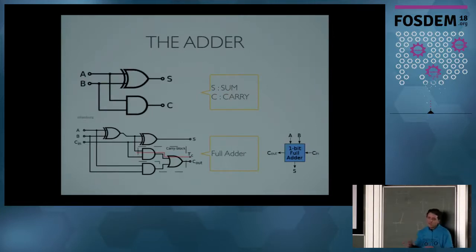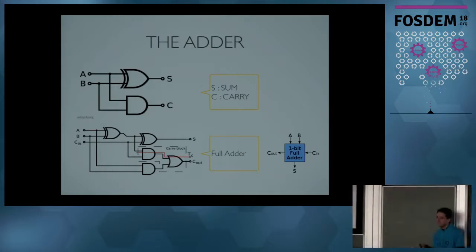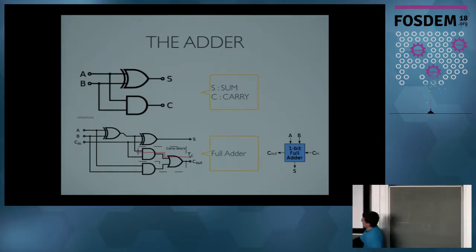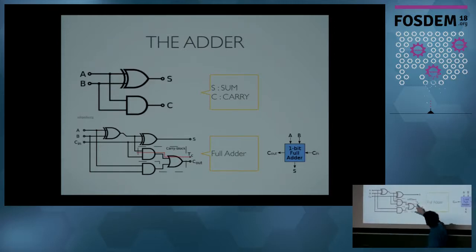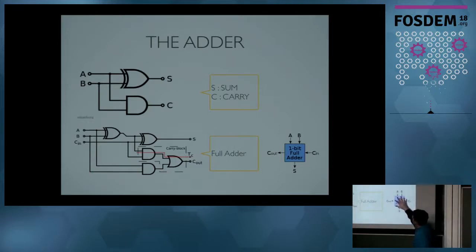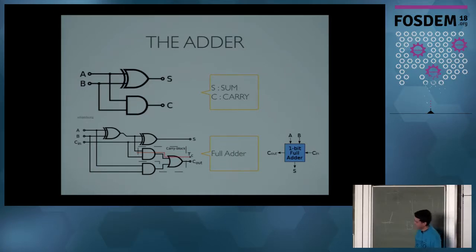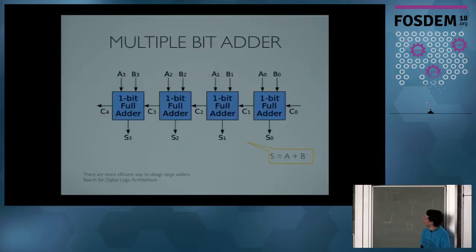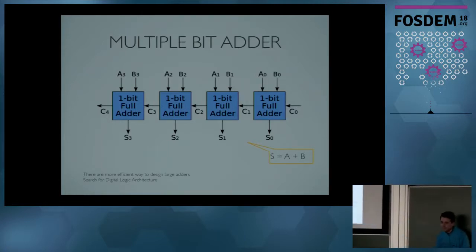Adding only one bit is not very interesting. But if you build a full adder with a carry output, you do something more interesting for math. This is the circuit of a full adder with two inputs, a carry input, the sum output, and the carry output. This is the block schematic for the full adder, just using the basic blocks we defined before. What is interesting with the full adder is to combine them to create an adder for, here for example, four bits — so you get more interesting mathematical computation using only basic blocks.